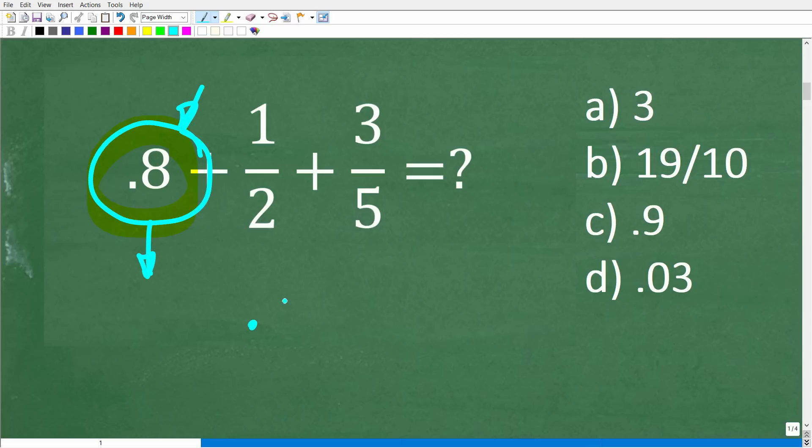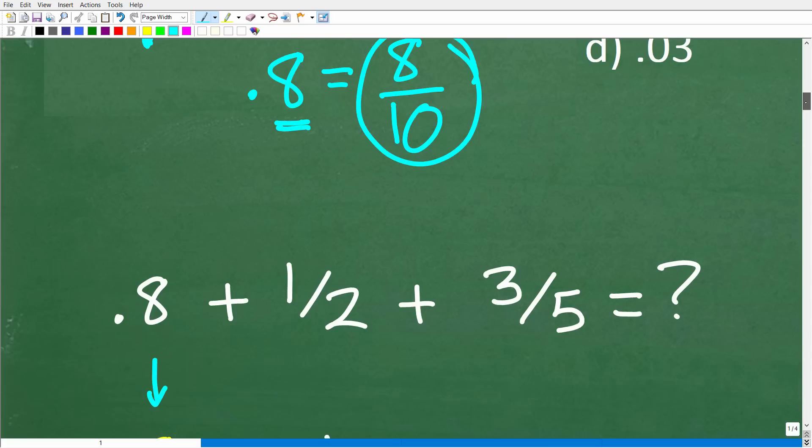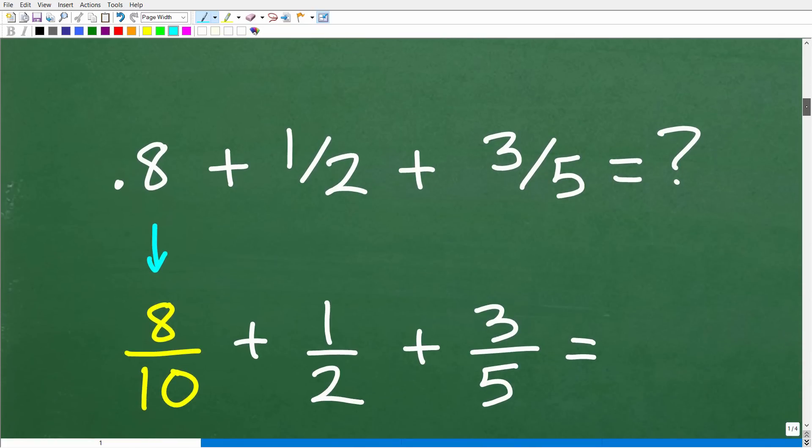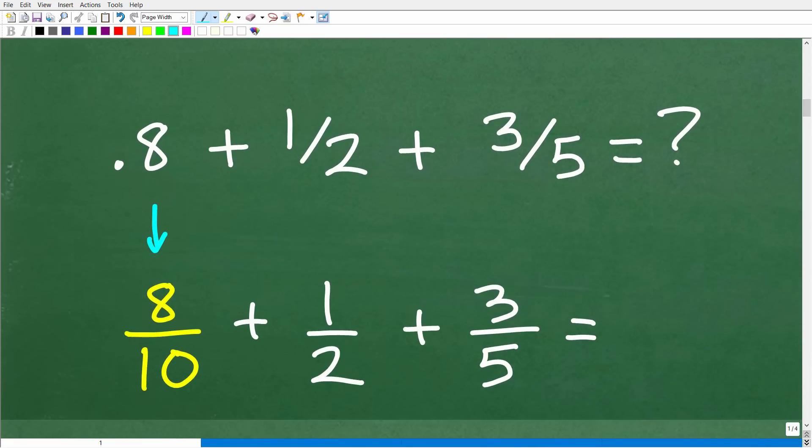And that would be correct. 0.8, if we say this decimal using place value, the 8 here is in the tenths place. So this is equivalent to 8 tenths. The decimal 0.8 is equivalent to the fraction 8 tenths. Now we have one big fraction problem.